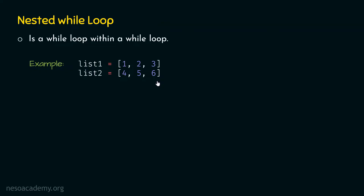In order to do this, we need to understand that we can access each item of these lists using their indices. For this purpose, we need to declare two variables — i and j. These variables will represent the index of one item of these lists at a time respectively. Variable i will represent the index of one item at a time of list one, and variable j will represent the index of one item at a time of list two. Let's declare i and initialize it to zero, and j also initialized to zero.